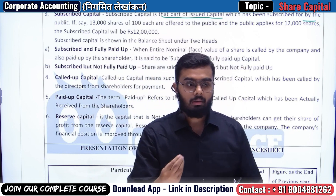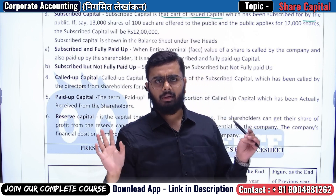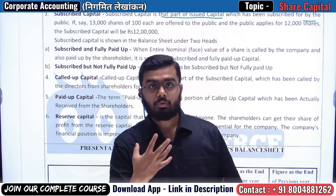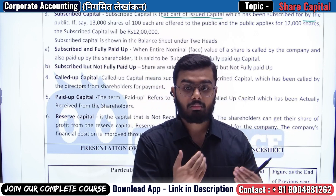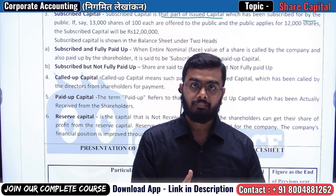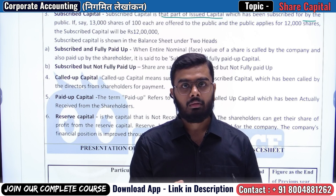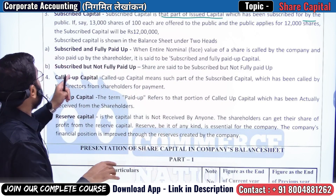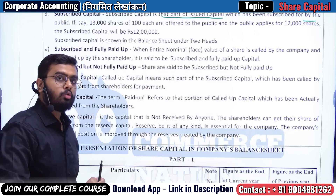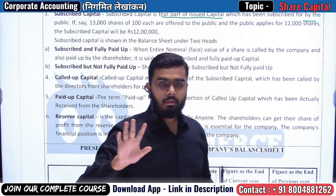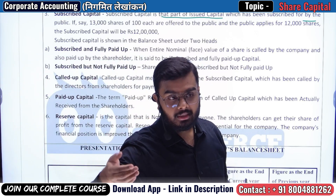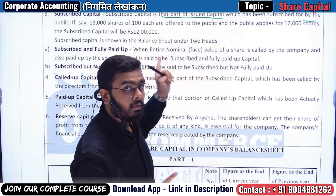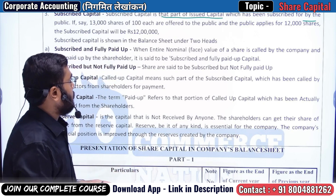It might be the case that the company issued 500 crore worth of shares and all 500 crore were subscribed. Or it could be that the company offered 500 crore but the public only bought shares worth 300 crore. So we need to understand how much is subscribed capital — how much did the company issue, and what was the public's response, how many shares did people actually buy? This is called subscribed capital.